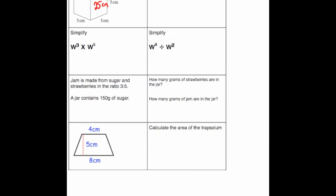The next question is to simplify W cubed times W to the power of 5. Remember, add the powers, so it's going to be W to the power of 8. Next question: W to the 8 divided by W squared. In this case, because we're dividing, we subtract the powers. So it's going to be W to the power of 6.